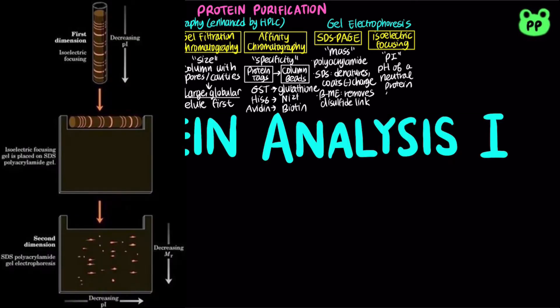Two-dimensional gel electrophoresis combines isoelectric focusing on the horizontal axis and SDS-PAGE on the vertical axis to separate proteins based on both charge and mass, providing a very sensitive analytical method.